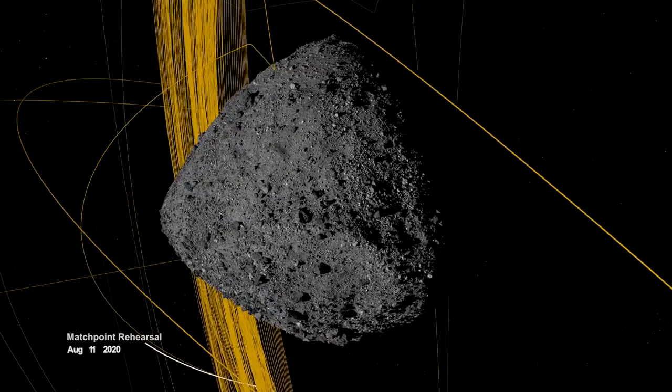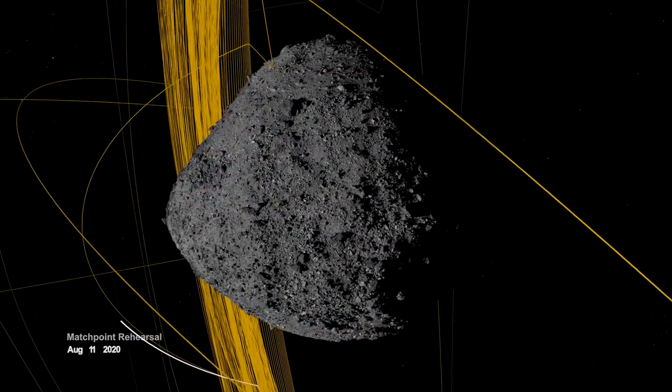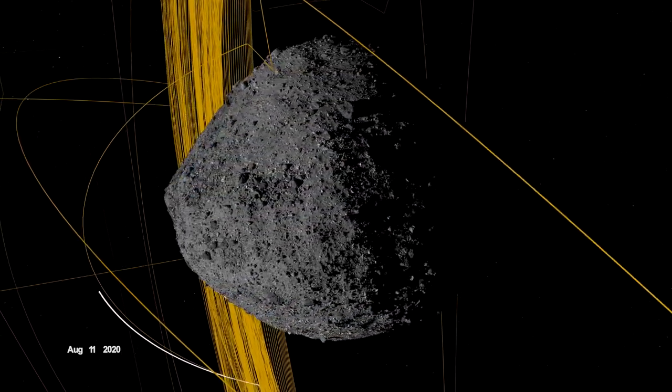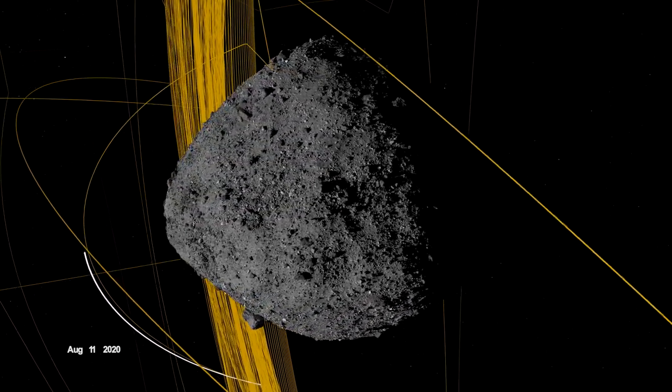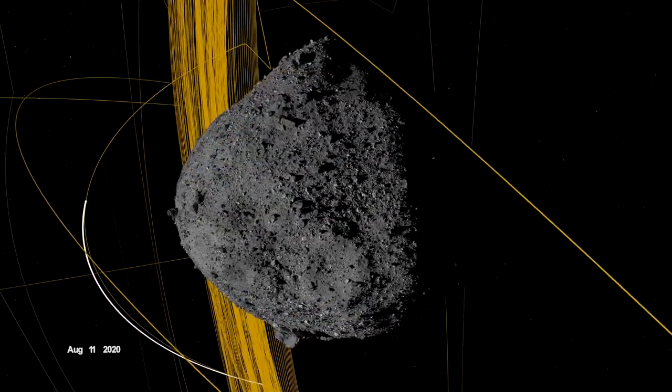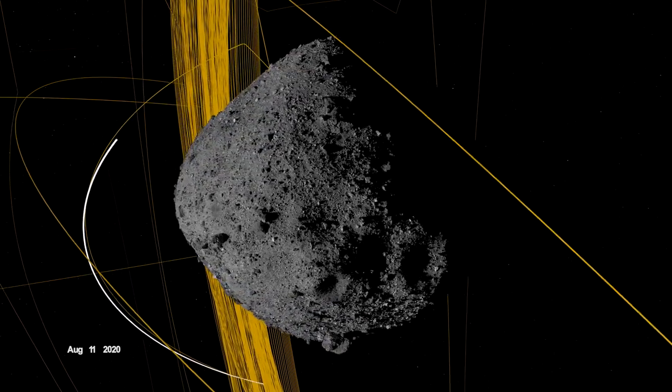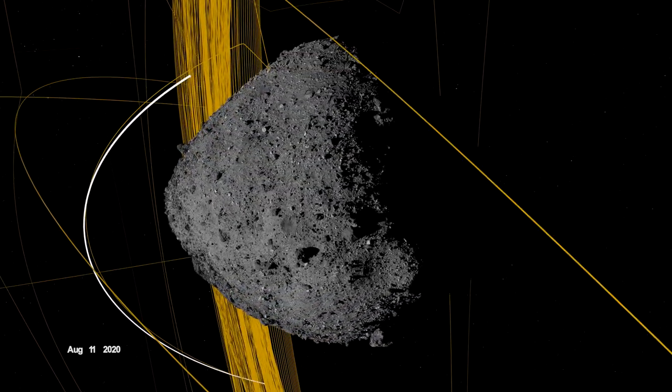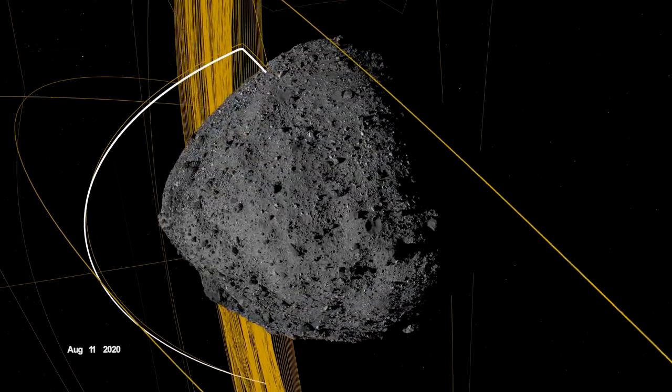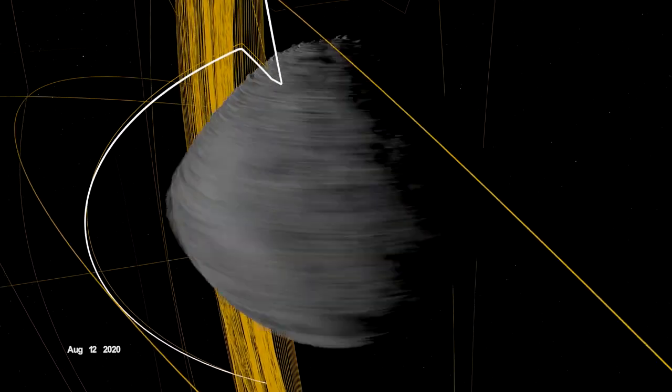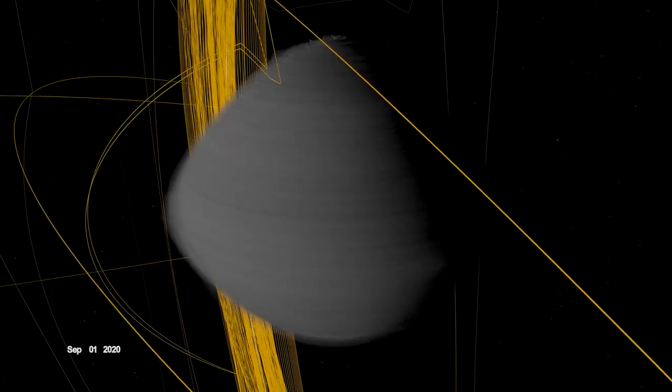On August 11th, OSIRIS-REx departed its home orbit and made a four-hour traverse to Bennu's northern hemisphere, retracing its earlier path. After performing the checkpoint engine burn to begin its descent, it made a second engine burn called Match Point to match Bennu's rotation before backing away at an altitude of approximately 40 meters.